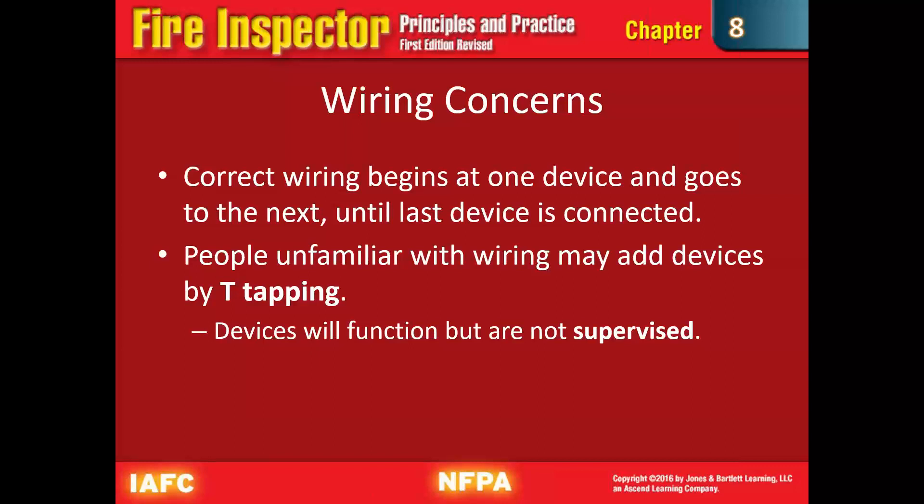Because fire alarm systems are electrical devices, wiring is a concern. Correct wiring begins at one device and goes to the next until the last device is connected — they're all chained together. People unfamiliar with wiring may add devices by T-tapping, which will function on site but won't be supervise-able. During an inspection, check the wiring to make sure they're using the proper gauge wire according to manufacturer specs and NFPA 72 — you can look and find examples of improperly installed wiring.